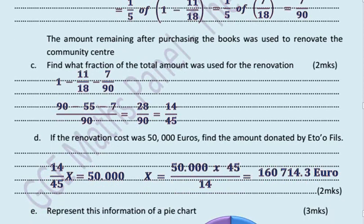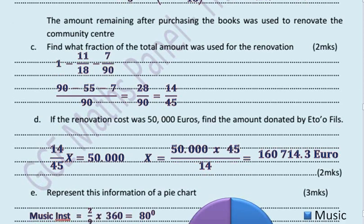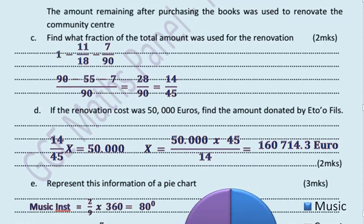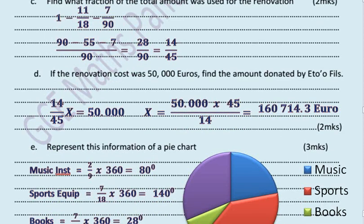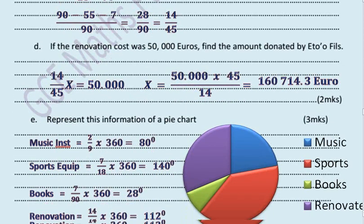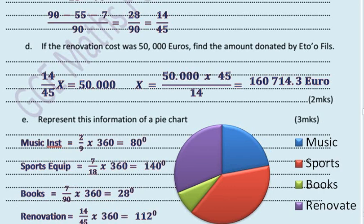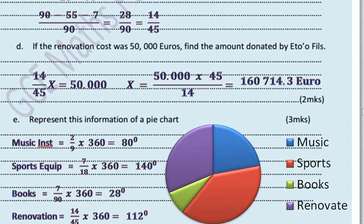E represents this information on the pie chart. Note that we have musical instruments, sports instruments, books for the library, and renovation. We will calculate an angle of the pie that corresponds to each of these using the fractions. So for musical instruments we had 2/9 and we get 2/9 of 360 degrees giving us 80 degrees. Sport equipment 7/18 times 360 degrees which is 140 degrees. Books 7/90 times 360 degrees giving us 28 degrees. And renovation 14/45 times 360 degrees giving us 112 degrees. You can decide to represent the angles on the pie itself or you can use the right hand side. Representing on the pie is better. I decided to use it this way to make it attractive.